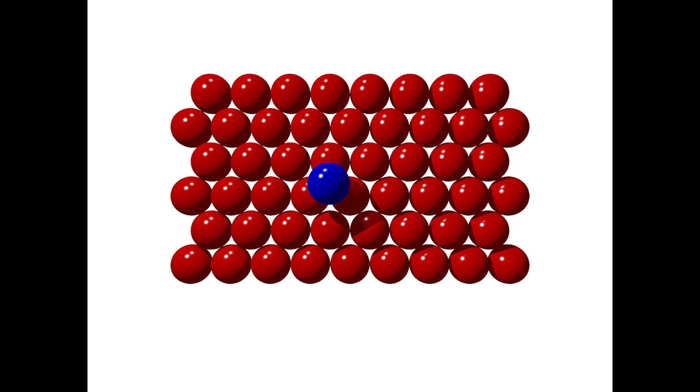While we could have placed the blue sphere anywhere we wanted on the surface, we are now limited as to where we can place a second blue sphere. There are certain triangular holes that we cannot occupy with a second sphere simply because part of the space is already occupied by the original blue sphere.